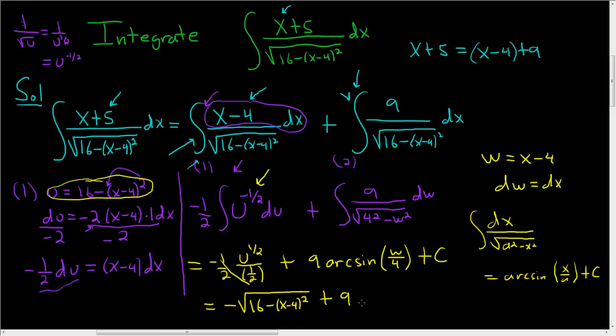and then we have the 9 arc sine. And then w was, let's see, w was x minus 4. So here we have x minus 4 over 4, that's a 4, plus c.